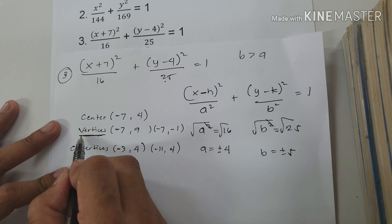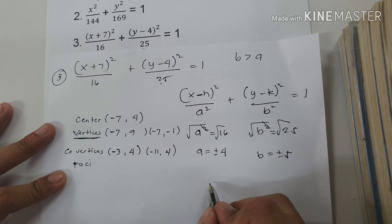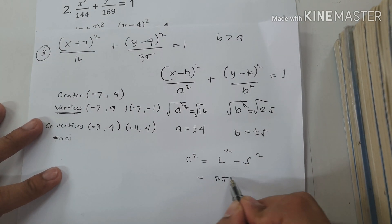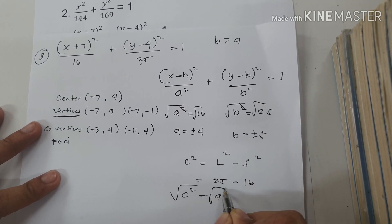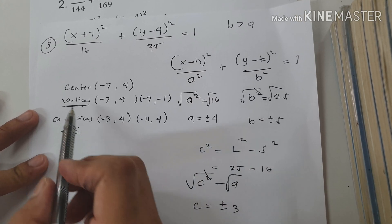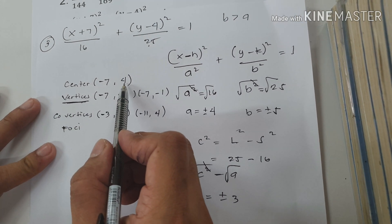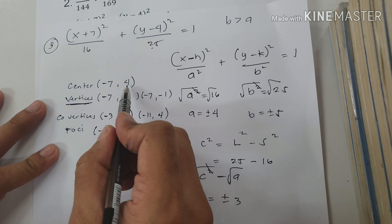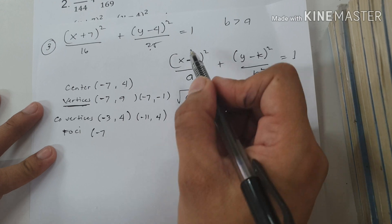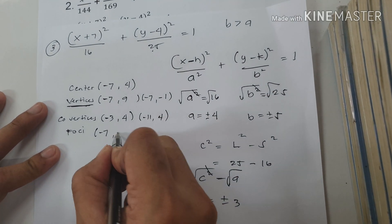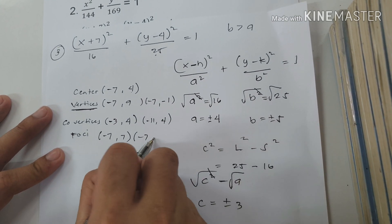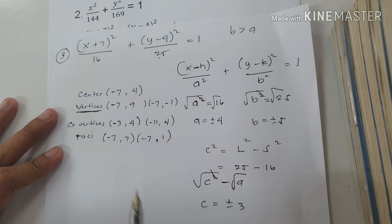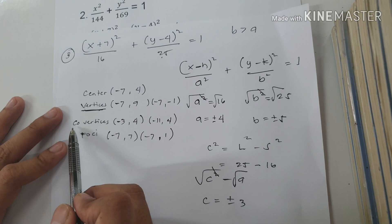To find foci — always aligned with the vertices — we use c squared equals longer minus shorter: 25 minus 16 is 9, so c is positive and negative 3. Just like with the vertices, we add c to the value of k. So: (negative 7, 4 plus 3) = (negative 7, 7) and (negative 7, 4 plus negative 3) = (negative 7, 1). So those are our vertices, co-vertices, and foci.